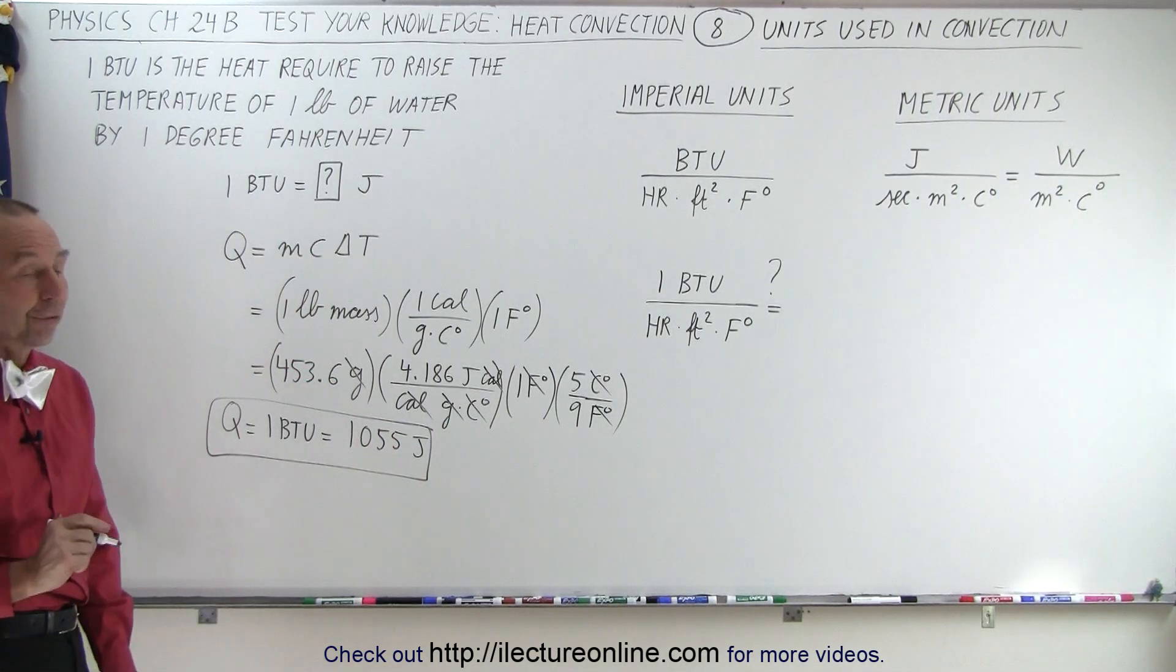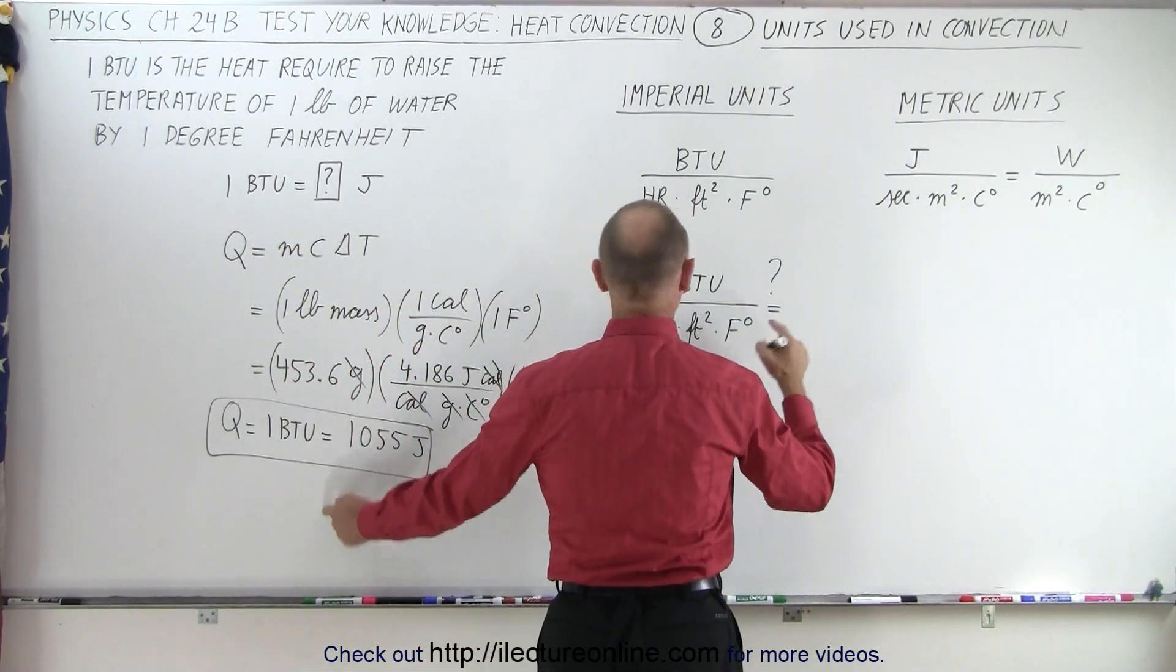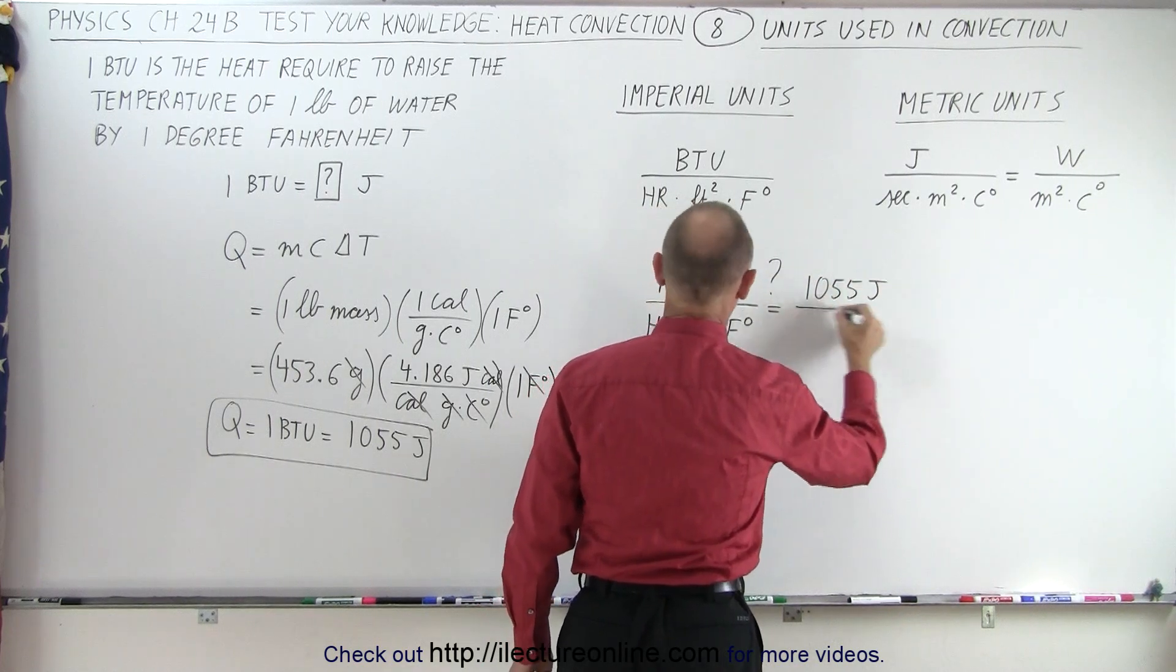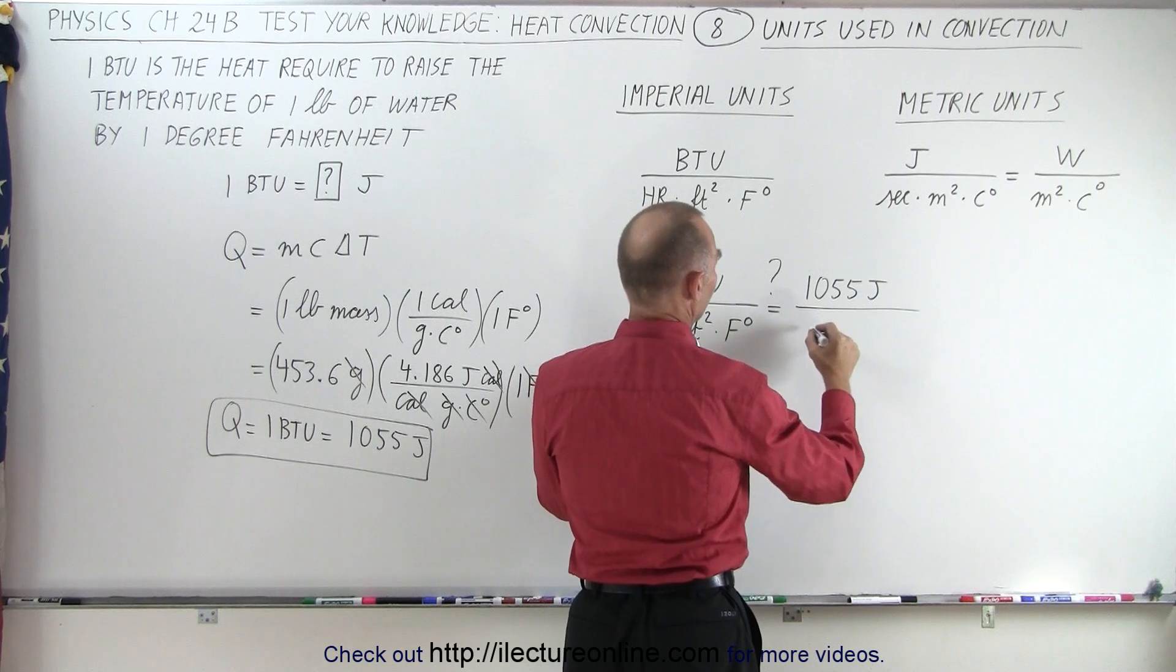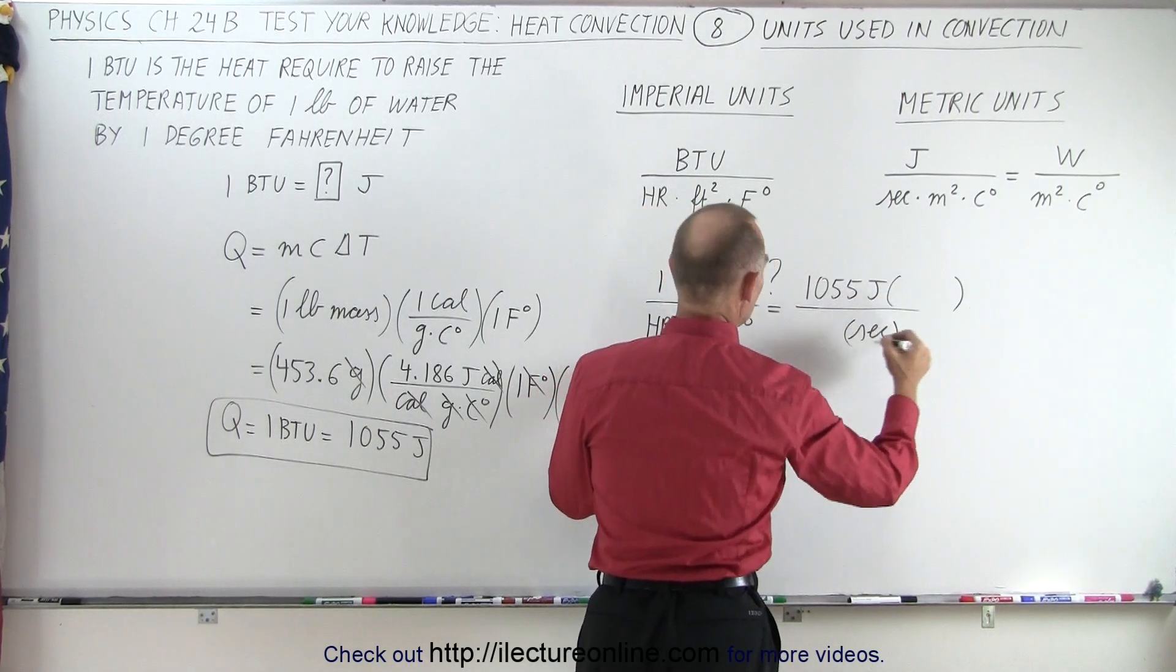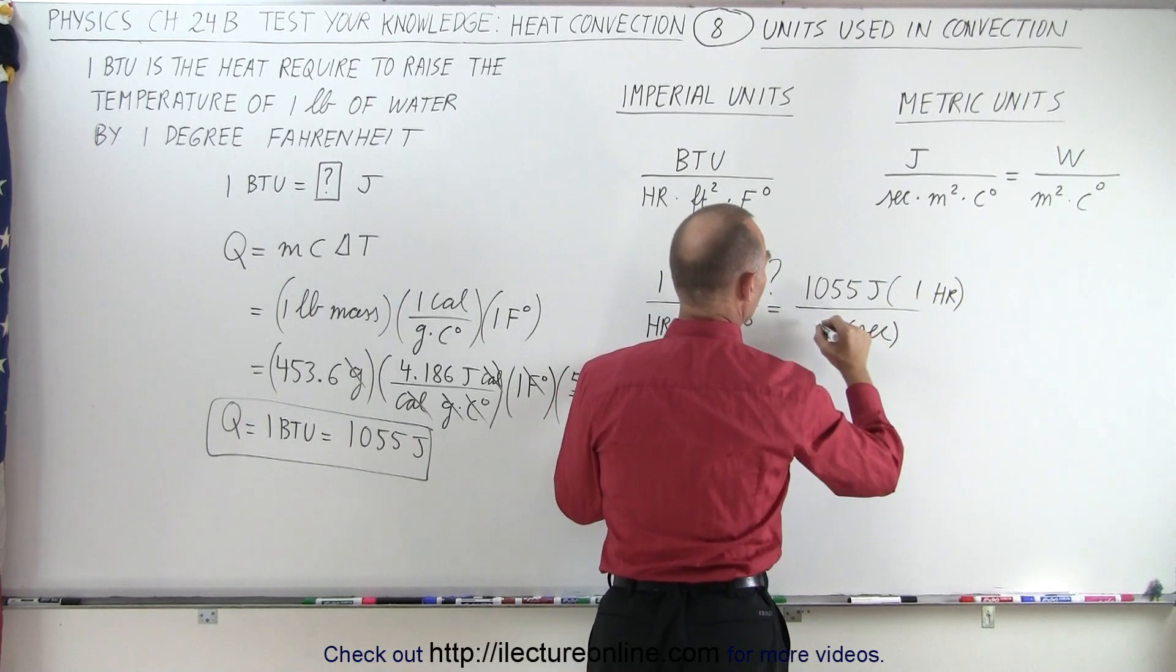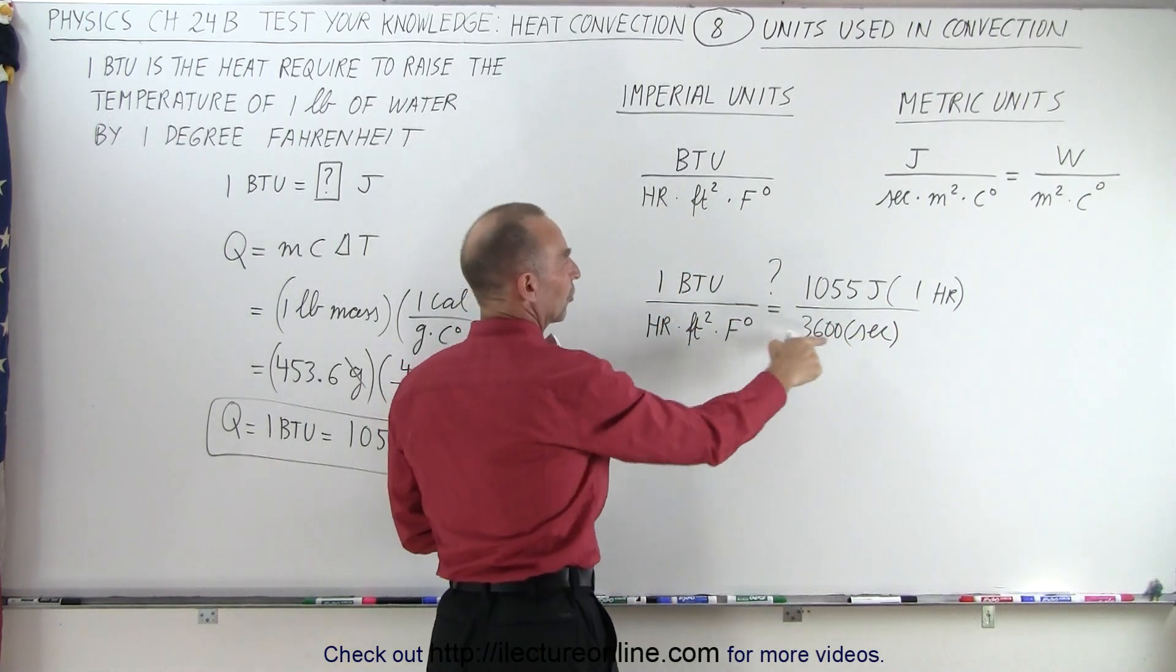Now we can go ahead and do the conversion to metric units. So a BTU can be replaced by 1055 joules divided by hour. To go from hours to seconds, we need seconds in the denominator and hours in the numerator. One hour is 3600 seconds.